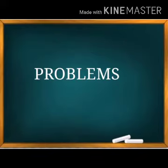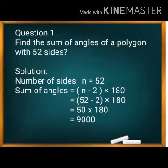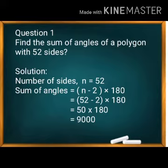Let's solve some problems using this formula. Problem 1: Find the sum of angles of a polygon with 52 sides. Here N = 52, so sum = (52 − 2) × 180 = 50 × 180 = 9,000 degrees.